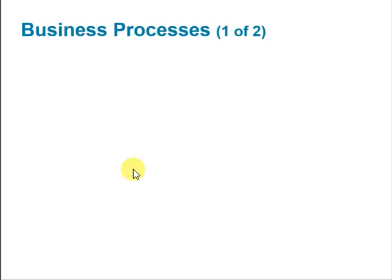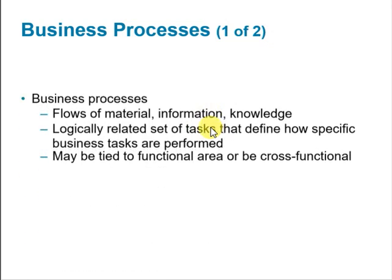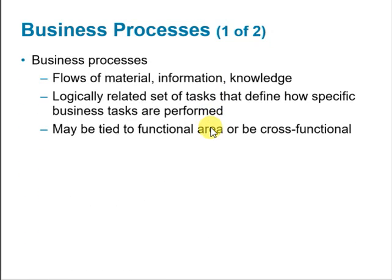One critical thing we need to understand is what we mean by a business process. Business processes are at the heart of every business. In order to operate, businesses must deal with many different pieces of information about suppliers, customers, employees, invoices, payments, and of course products and services. A business process consists of the flow of materials, the flow of information, and the flow of knowledge. Business processes can be described as a logically related set of tasks that define how specific business tasks are performed.